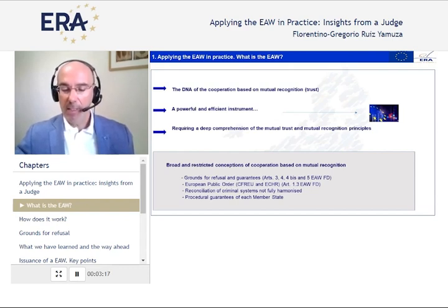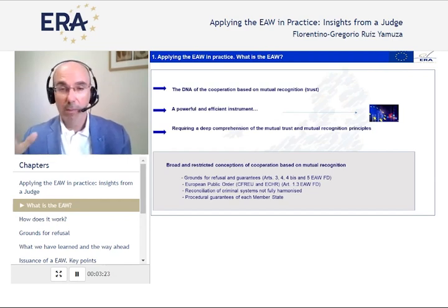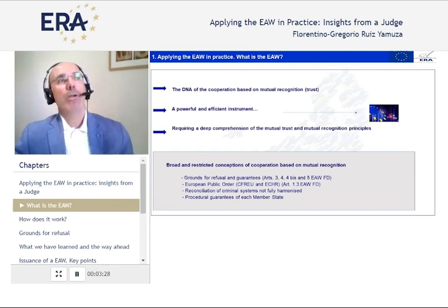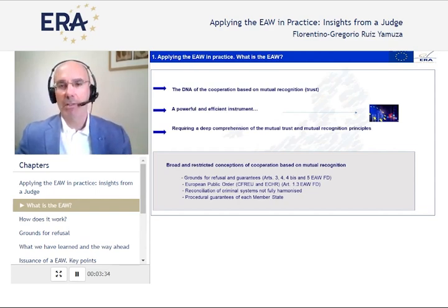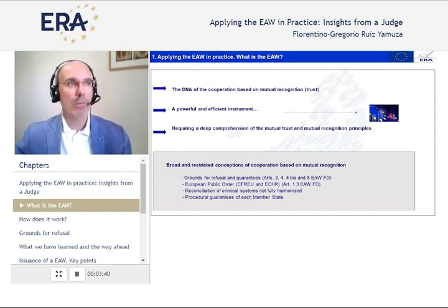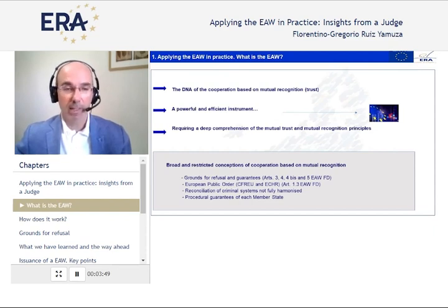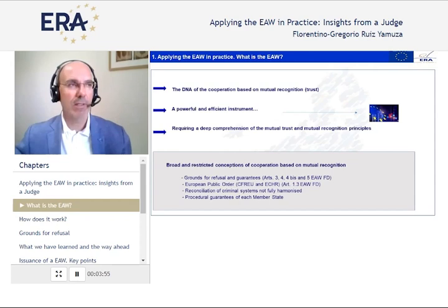Cooperating within the European Union is not the same as cooperating within national borders. We all know that. We need to bear in mind that we are not just cooperating as if we were between national judges. So we have some rules. Those rules are the grounds for refusal, which could be quite complex at times — the European public order, which is to say fundamental rights issues, the differences between systems not fully harmonized, and the differences between procedural schemes.